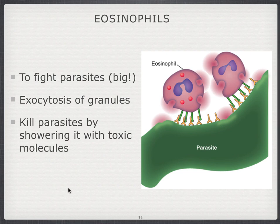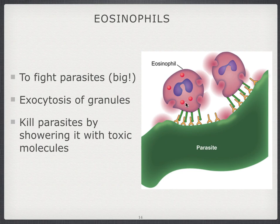Eosinophils are another type of granulocyte that can help out with immune defenses, but these cells are called in when there's an infection with parasites. Parasites are usually too big to eat, so neutrophils are not much use here. Eosinophils are better at fighting big parasites because they're filled with granules containing toxic substances. They can exocytose these granules, which will then attack and kill the parasite through these extracellular toxic molecules.